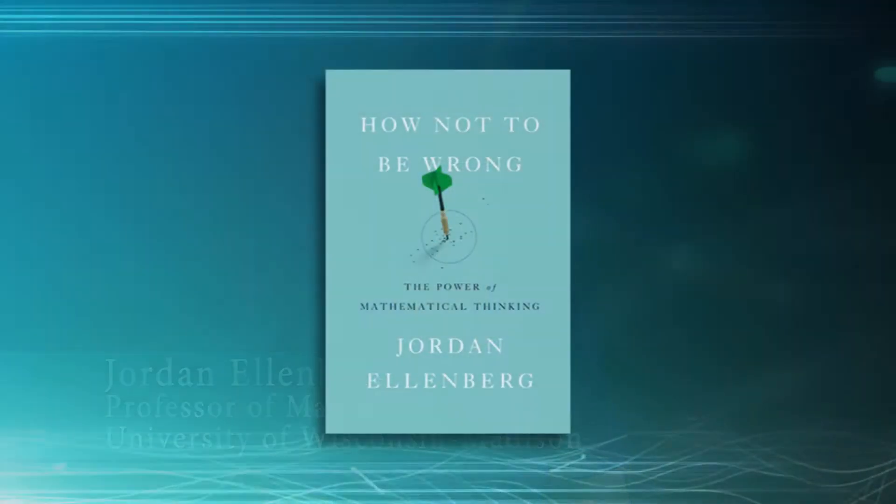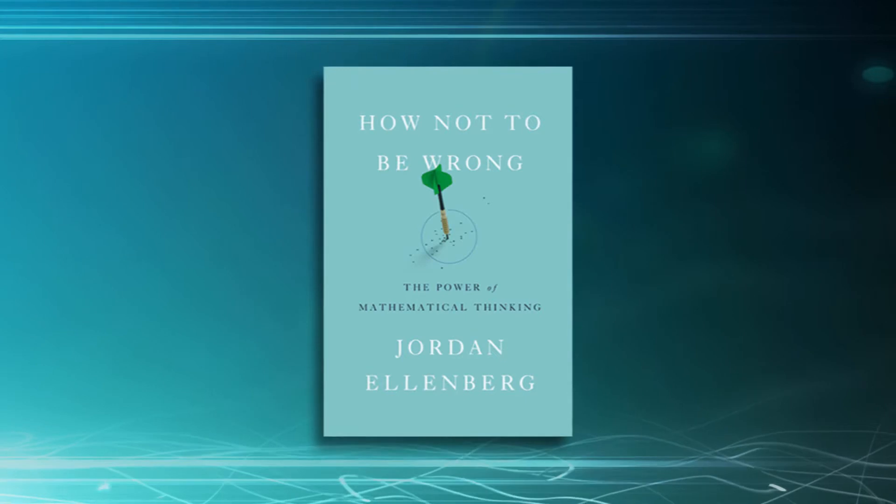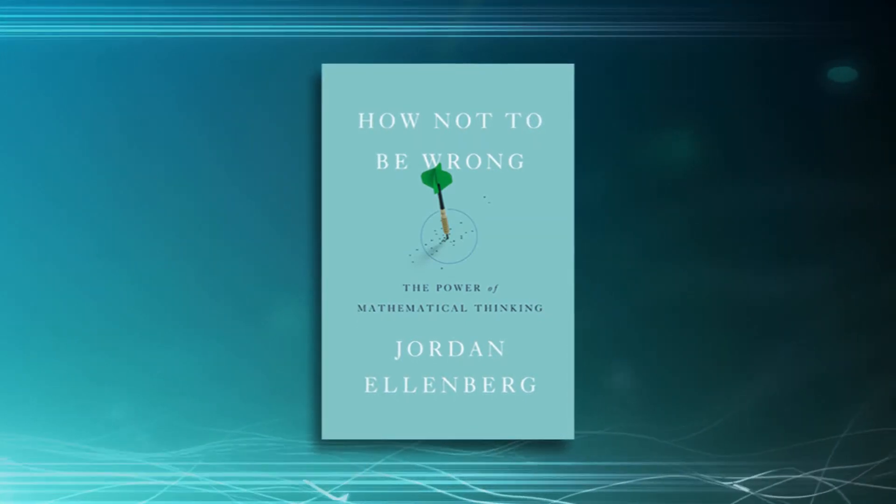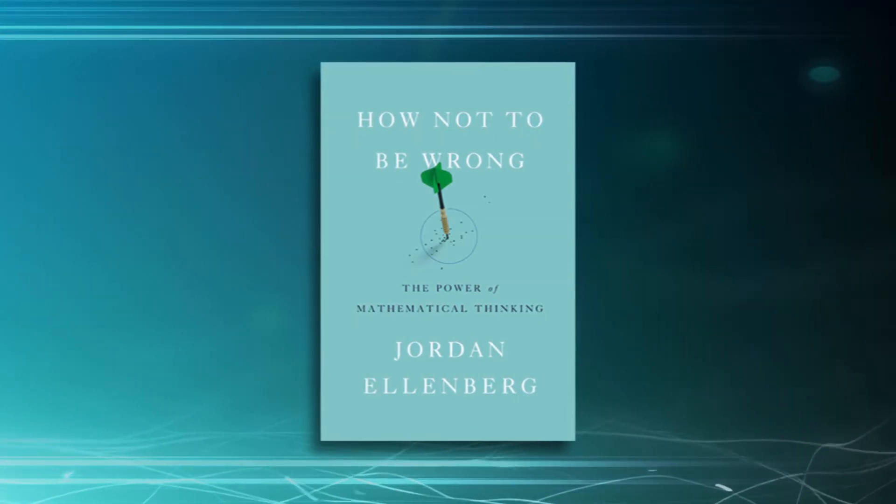So in the book How Not to Be Wrong, I talk about a lot of mathematical notions which on the one hand are not so complicated — they're simple to explain — but they're very broad in their application and deep in their meaning. One of those things I want to talk about right now is the idea of expected value, which is the fundamental way that mathematicians talk about the value of something whose true value is unknown or subject to uncertainty, subject to some process of chance.